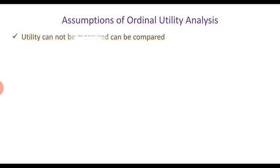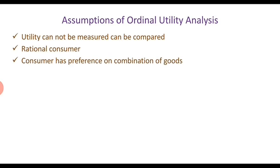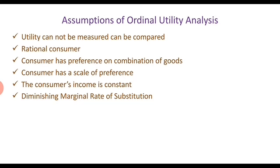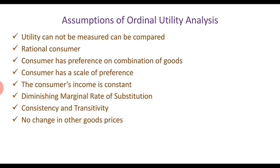The important assumptions of ordinal utility analysis are: utility cannot be measured, it can only be compared as first, second, third, fourth, etc. The consumer is rational. The consumer has preferences on combinations of goods and has a preference scale. The consumer's income is constant. The marginal rate of substitution is diminishing. There is consistency and transitivity. There is no change in other goods' prices.